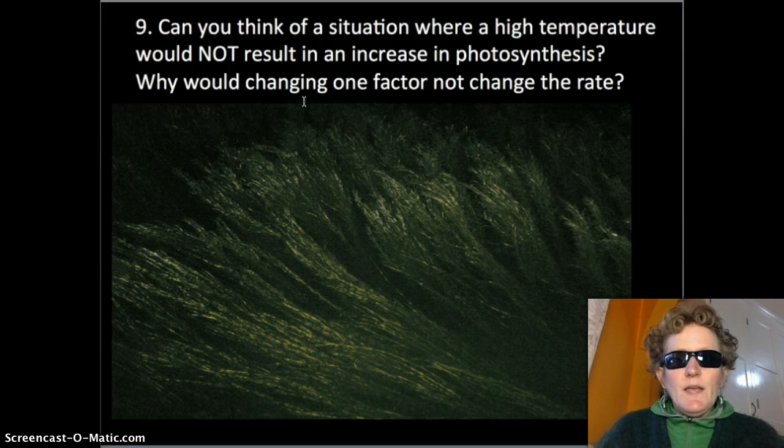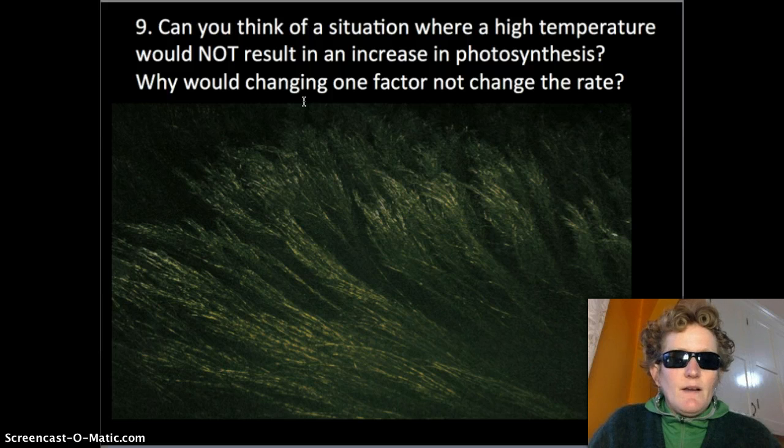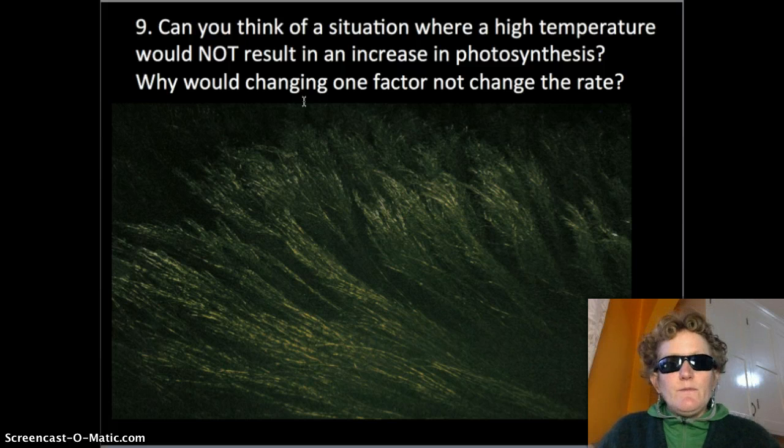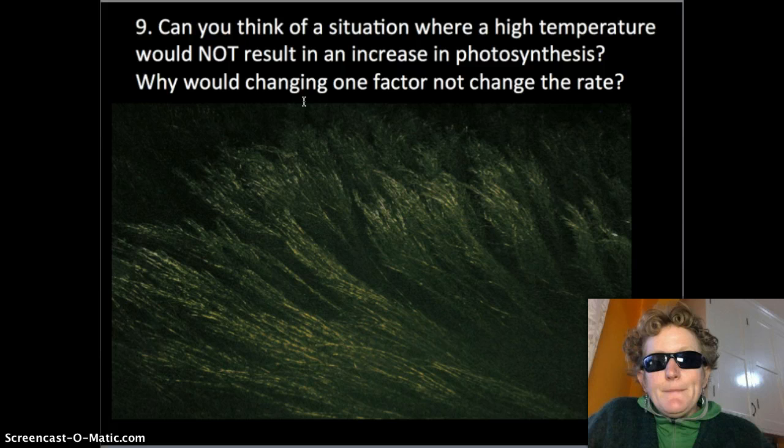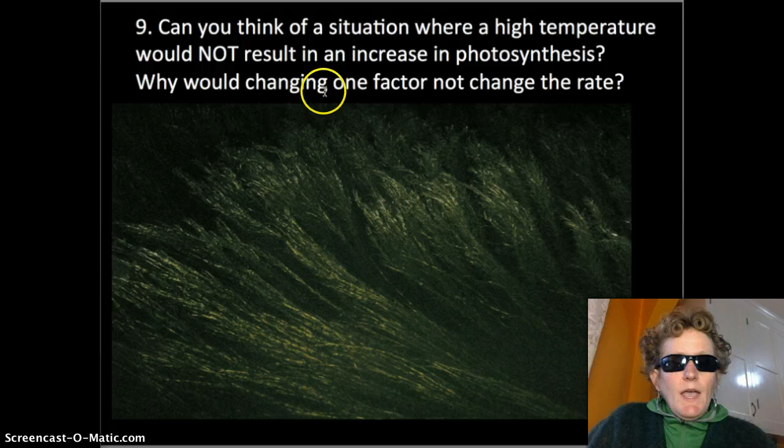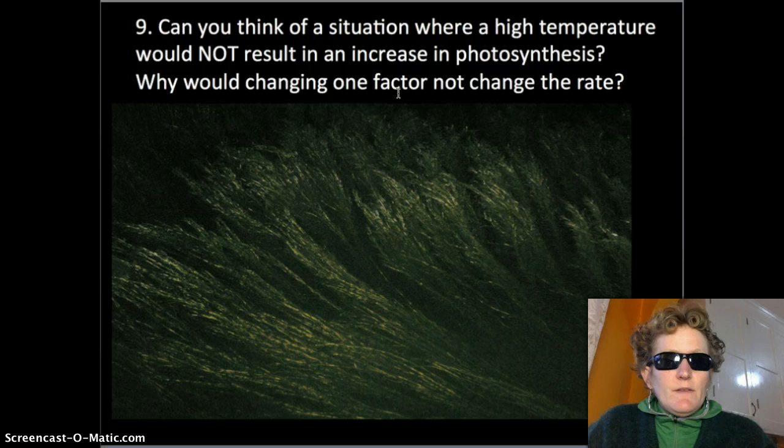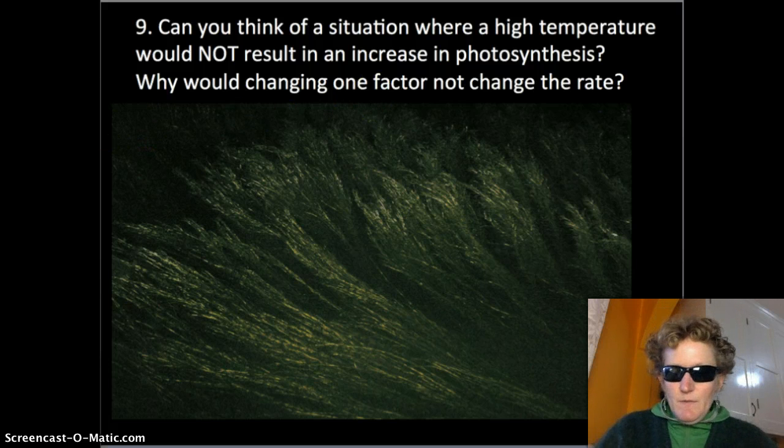So if there's no light it doesn't matter what the other factors that affect photosynthesis are. You can't do photosynthesis without light. So plants at night don't photosynthesize. They do cellular respiration as they do during the day to break down glucose. But they don't do photosynthesis. No light, no photosynthesis. Changing any of the other factors, humidity, carbon dioxide, temperature will not affect photosynthesis unless there's light. So light's the most important thing.